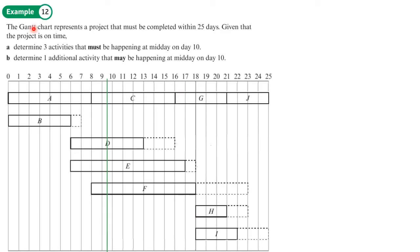Example 12. The Gantt chart represents a project that must be completed within 25 days, given that this project is on time. Part A: Determine three activities that must be happening at midday on day 10. Determine one activity that may be happening at midday on day 10.